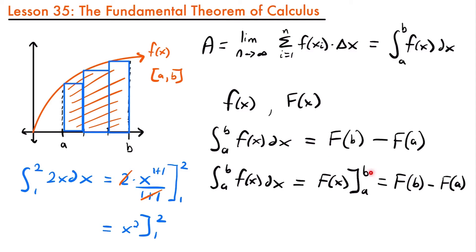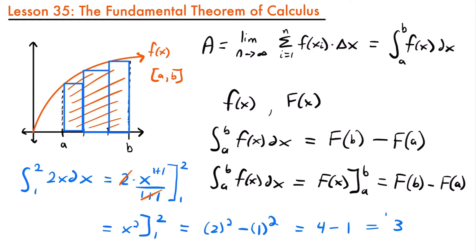Now we can plug in a and b and subtract. This will be equal to 2 squared minus 1 squared. We plugged our upper bound b into the antiderivative x squared to get 2 squared, and then subtracted the lower bound 1 plugged in to get 1 squared. So this is equal to 4 minus 1, which equals 3. The area under the function 2x from x equals 1 to x equals 2 is 3 square units.